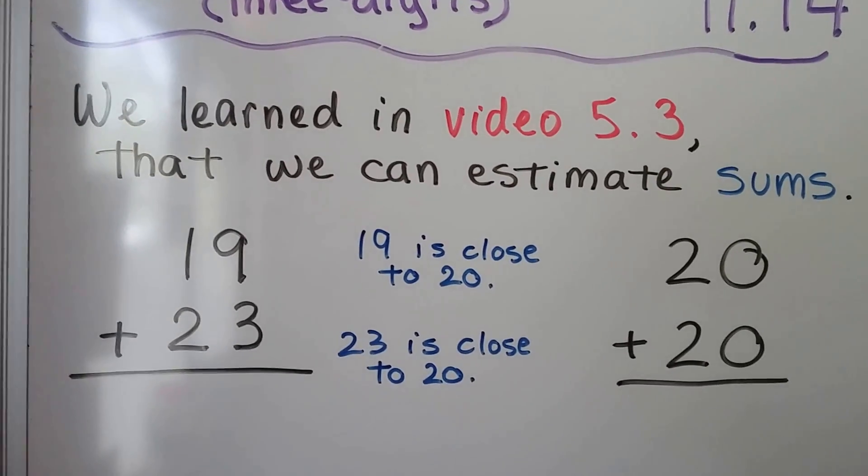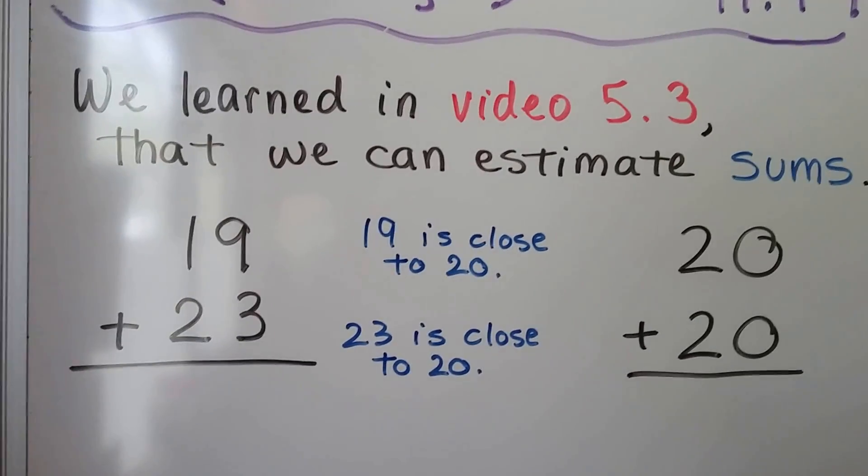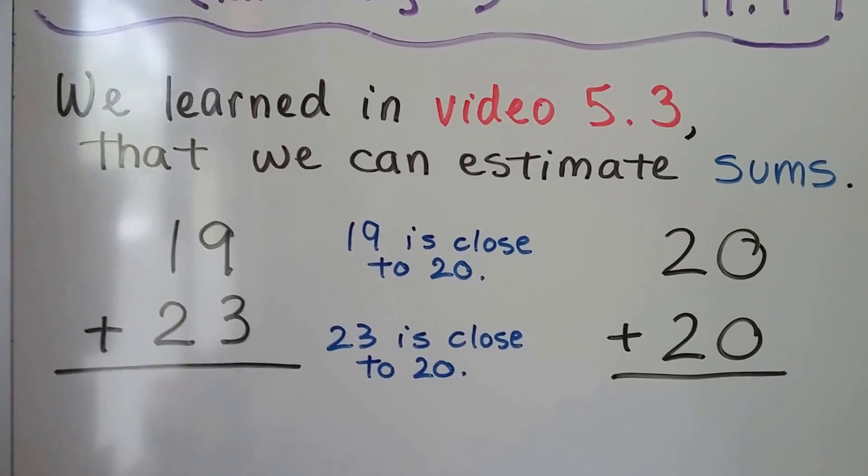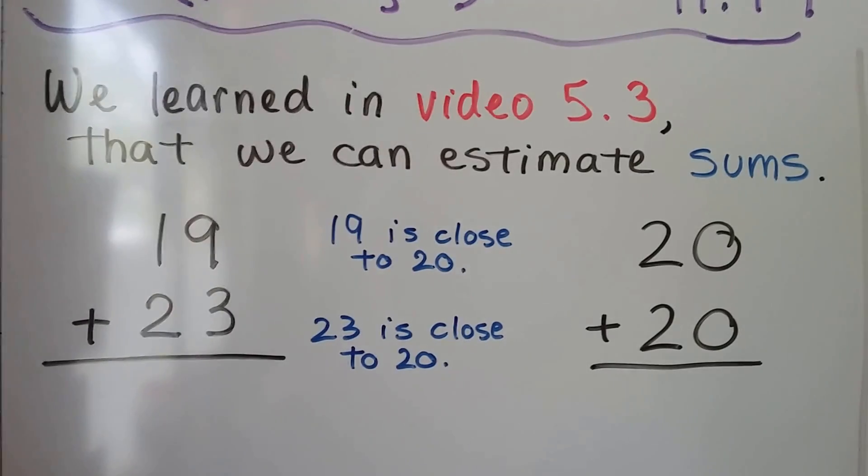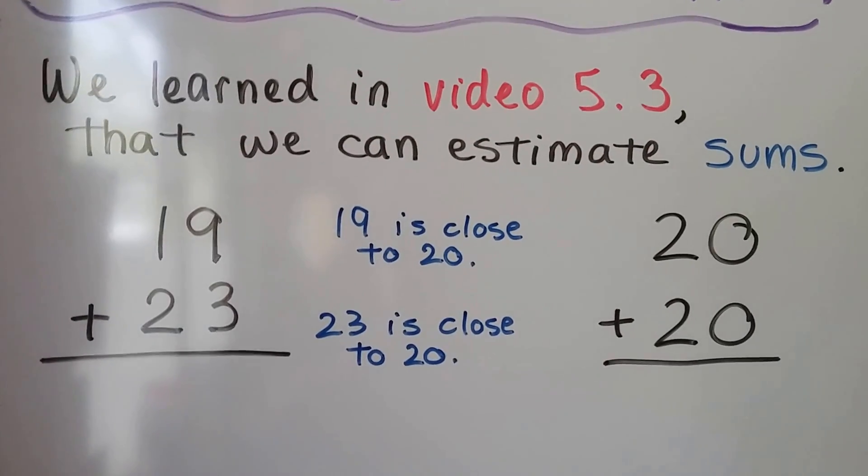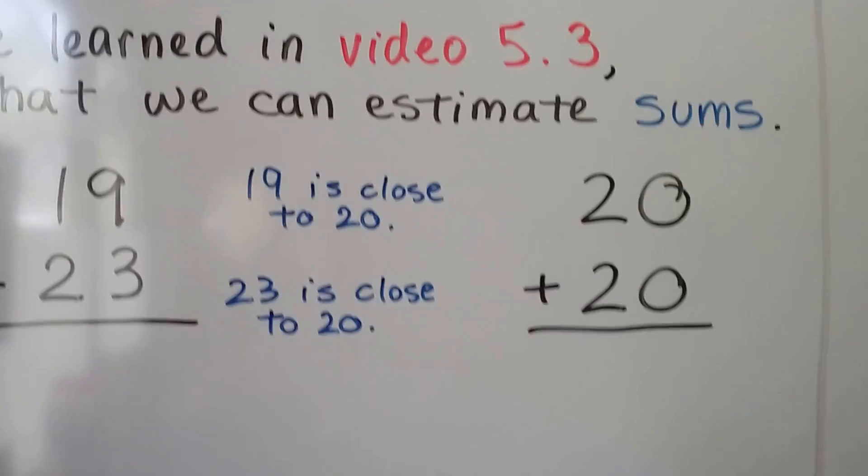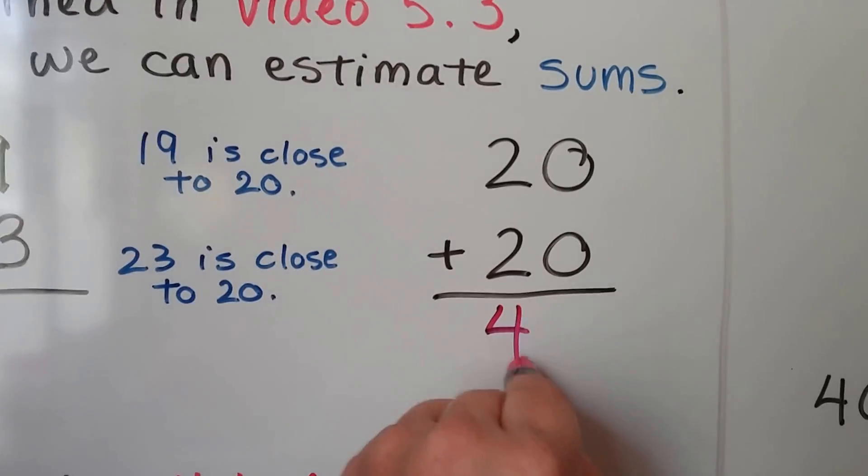We need to add 19 plus 23. We can estimate the sum because 19 is close to 20 and 23 is also close to 20. We can add 20 plus 20 and get 40. It's not the exact answer, it's an estimate. It's close to the exact answer.